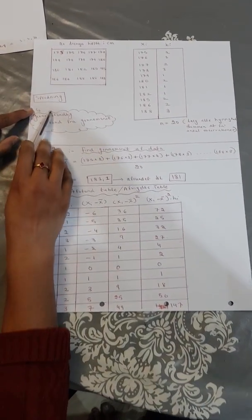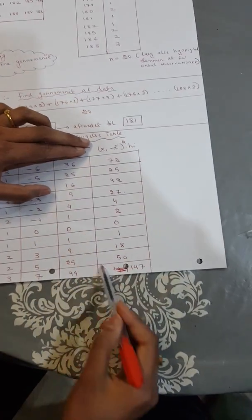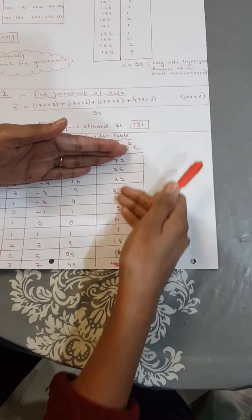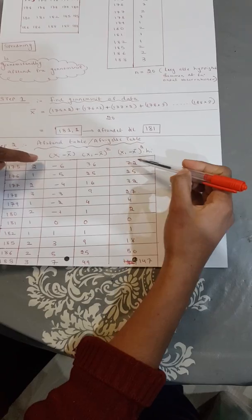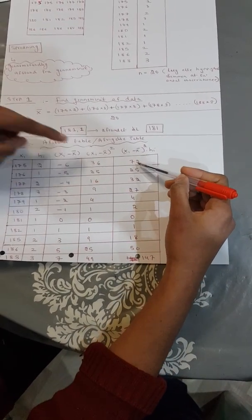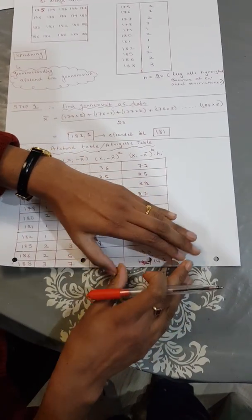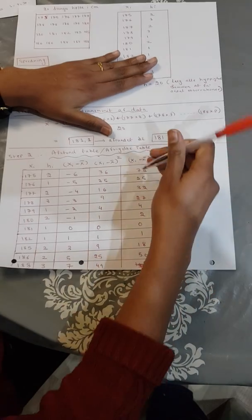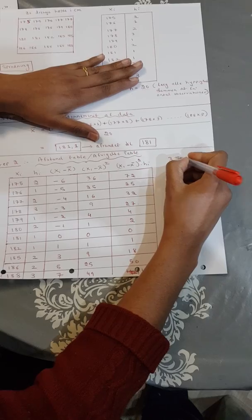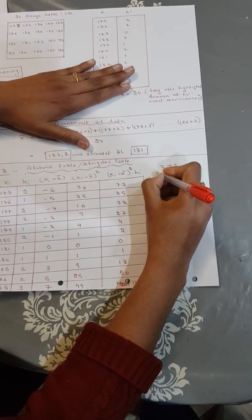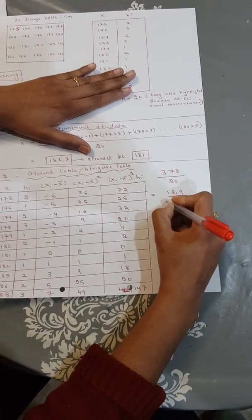As we said, this is deviation from mean (genomsnitt). So we can now find the variance here. That means we sum all of these together. And we divide by the total observations. So I sum this plus this plus this and so on. And divide it by 20. So if I have all these numbers summed and divide by 20, that gives us 1.9. That is the variance.